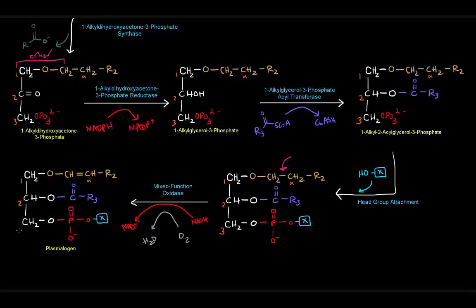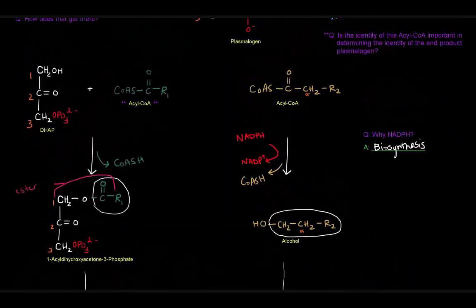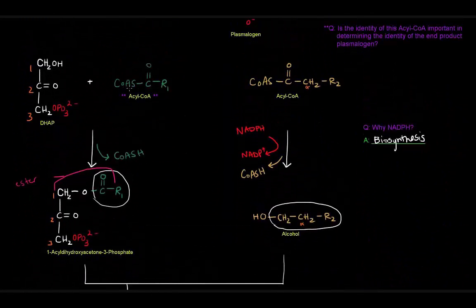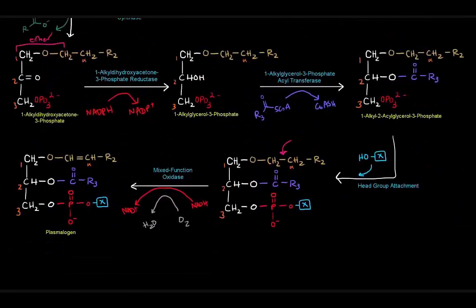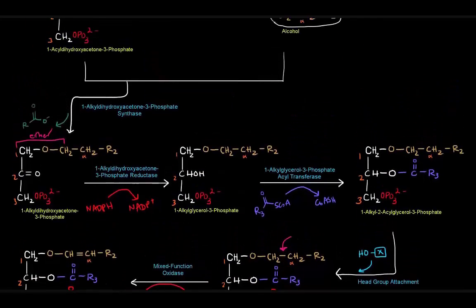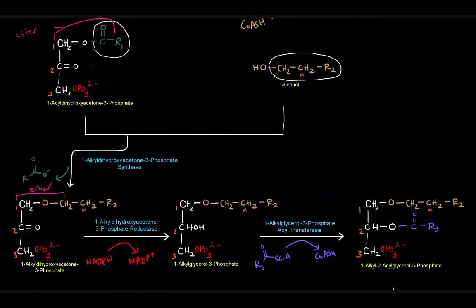Now, what I want to do is go back to that question that we asked earlier about that acyl-CoA, this green one, this green acyl-CoA. Is the identity of this acyl-CoA important in determining the identity of the end product plasmalogen? Well, this is the green one, right? What happened to it in our product? Is it in our product? No. It's not there. We lost it.